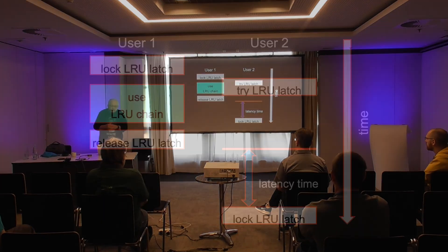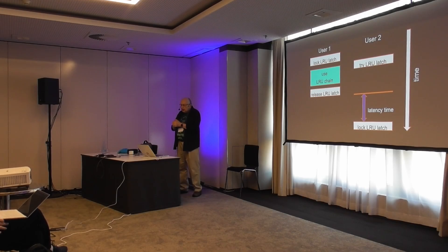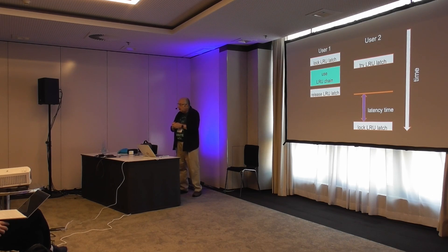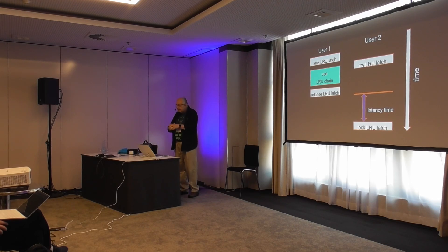In the meantime, somebody else who wants to update the LRU chain tries to get the lock and fails. Until the first person releases the lock, the second person can't acquire it. When the release happens, it may take some time for user number two to notice, or to be scheduled by the OS, or various other things. So they're not always able to get the latch right away — there's latency there.